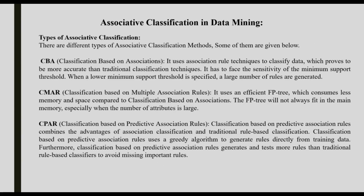There are several types of associative classification. The first is classification based on association rules. The second is classification based on multiple association rules. The third is classification based on predictive association rules. Classification based on association uses association rule techniques to classify data, which proves to be more accurate than traditional classification techniques. It has to face the sensitivity of the minimum support threshold — when a lower minimum support threshold is specified, a large number of rules are generated.